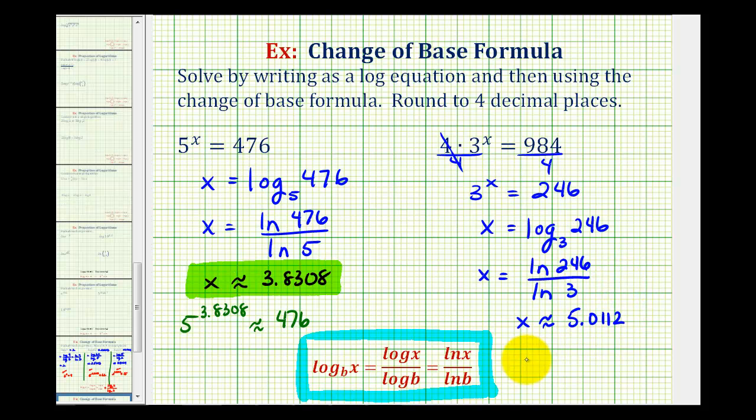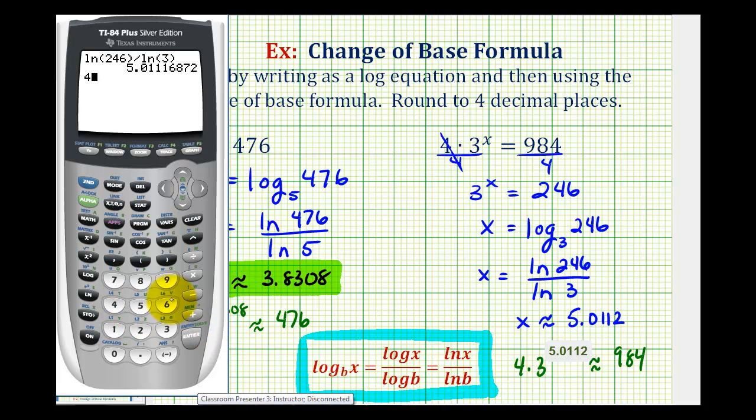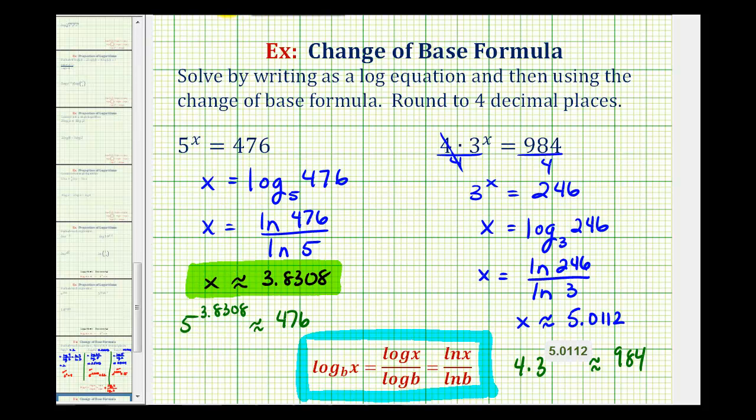Going back to the original equation, this means 4 times 3 to the power of 5.0112 should be approximately equal to 984. Let's go ahead and check that as well. Notice the value is very close to 984. Therefore, this does verify our solution x is approximately 5.0012.